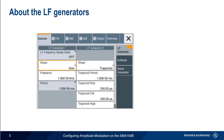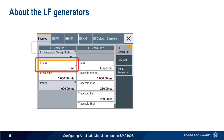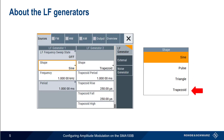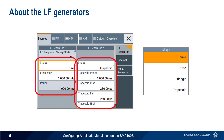The SMA100B contains two internal LF, or low-frequency, generators. You can think of these as simple function generators built into the instrument, which we can use as modulation sources. Like a standalone function generator, each LF generator supports four different shapes: sine, pulse, triangle, and trapezoid. The configuration parameters will be different depending on which shape is chosen.